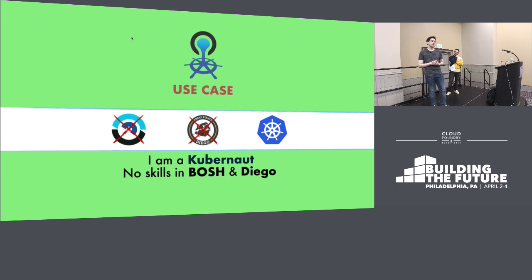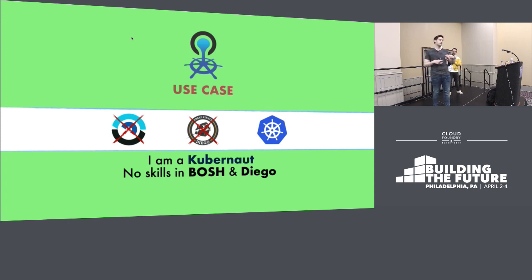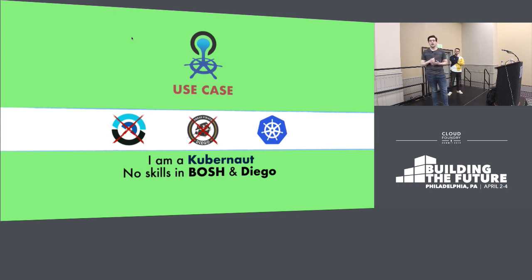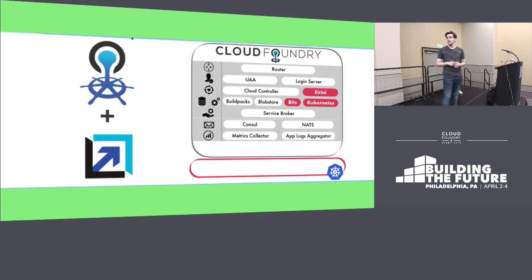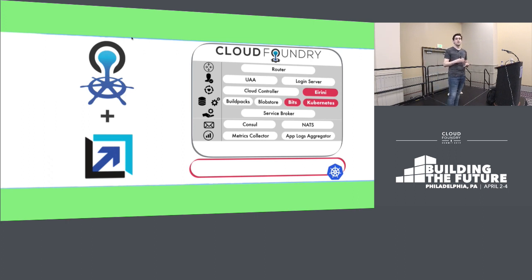The next use case is similar to the previous one but from a different point of view. If you're someone coming from the Kubernetes community, you probably need a great PaaS, and Cloud Foundry can be that. Previously, with Bosch and Diego, the transition was not very smooth. Now with Irini and containerized Cloud Foundry, it's much easier. You get the whole Cloud Foundry in Kubernetes with your apps running as Kubernetes-native objects — the perfect time for someone using Kubernetes to try out Cloud Foundry.